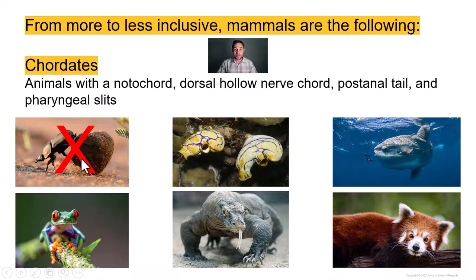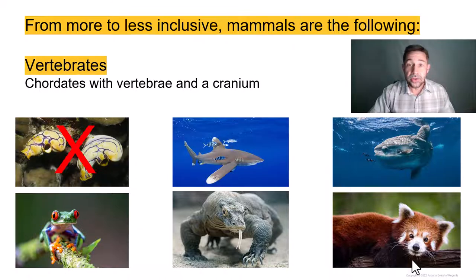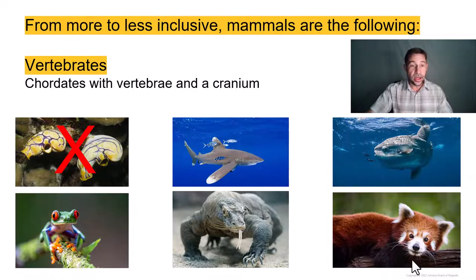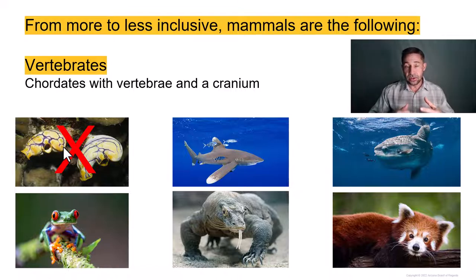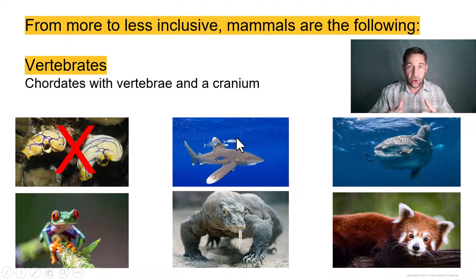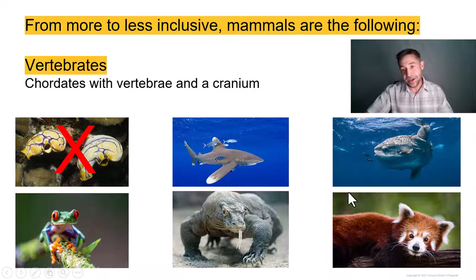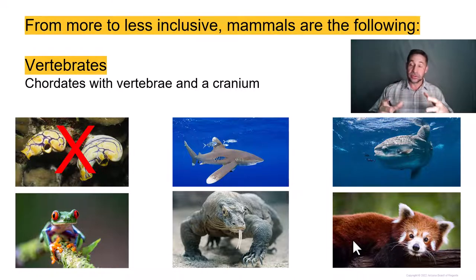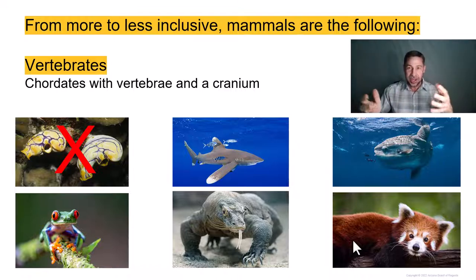Remember, 60% of animals are beetles. The subphylum Vertebrata, or the craniates, is going to exclude the tunicates but include the jawless fishes, the cartilaginous fishes — the sharks and rays — the bony fishes, the amphibians, reptiles, and the star of our show, the mammals. All of these animals develop a cranium and vertebrae, with the exception of the hagfish, which has only a rudimentary vertebral column.